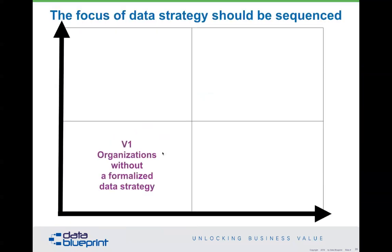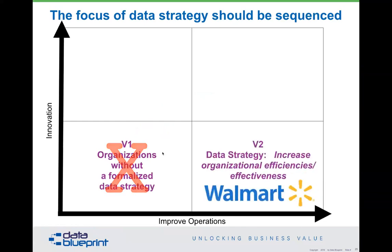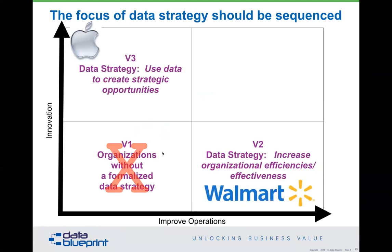Another component of sequencing has to do with how most organizations try to make their analytics journey. In strategy, there are only two dimensions: you improve your existing operation, or you innovate. Most organizations don't have a formalized strategy, so that's not a good way to do it. Instead, look at quadrant two — improved operations, where Walmart is generally recognized for being effective and efficient — and quadrant three, innovation, where most people would describe Apple. Remember, we're talking about sequencing.